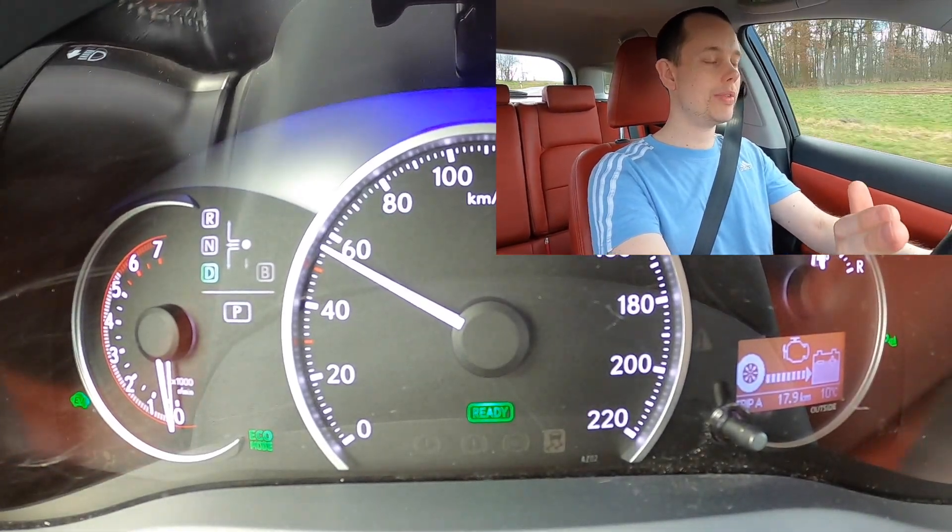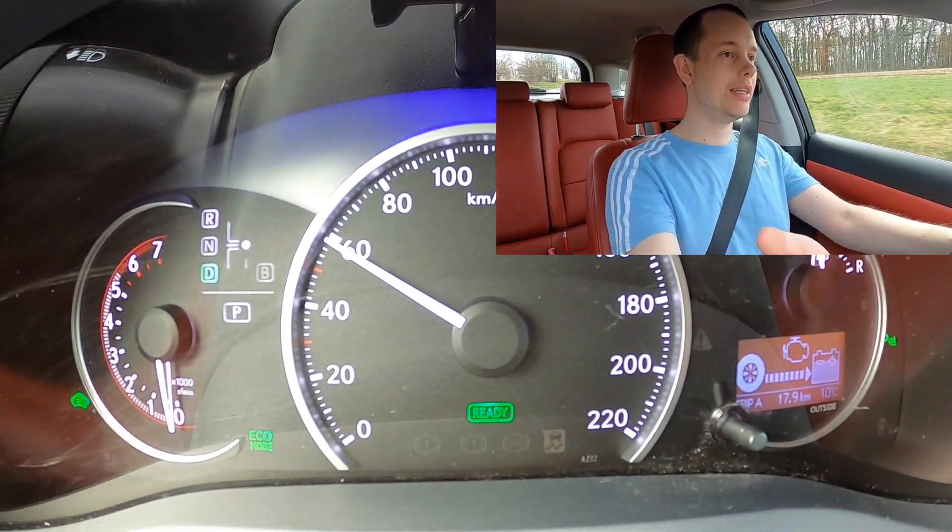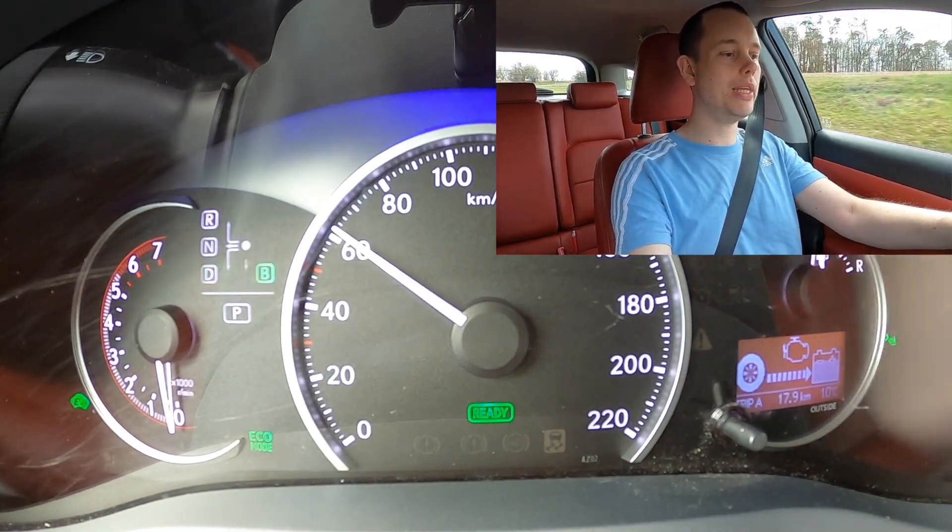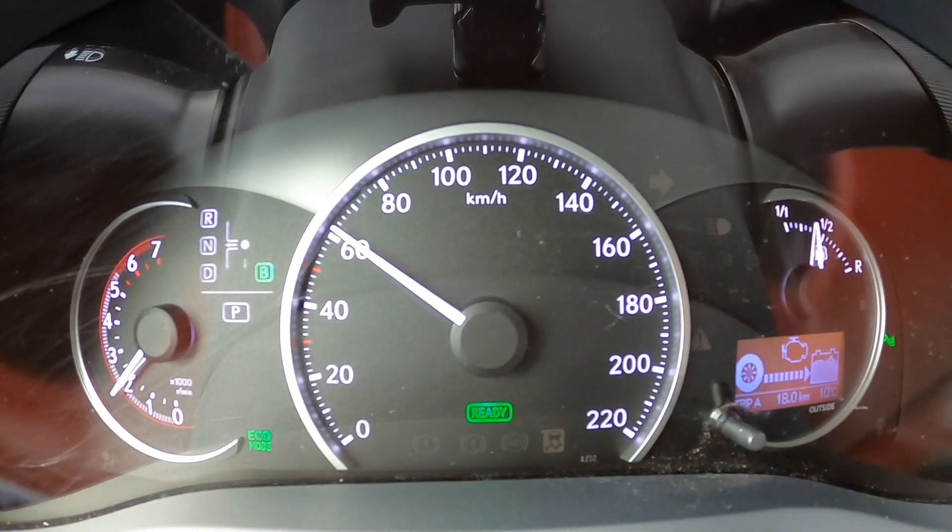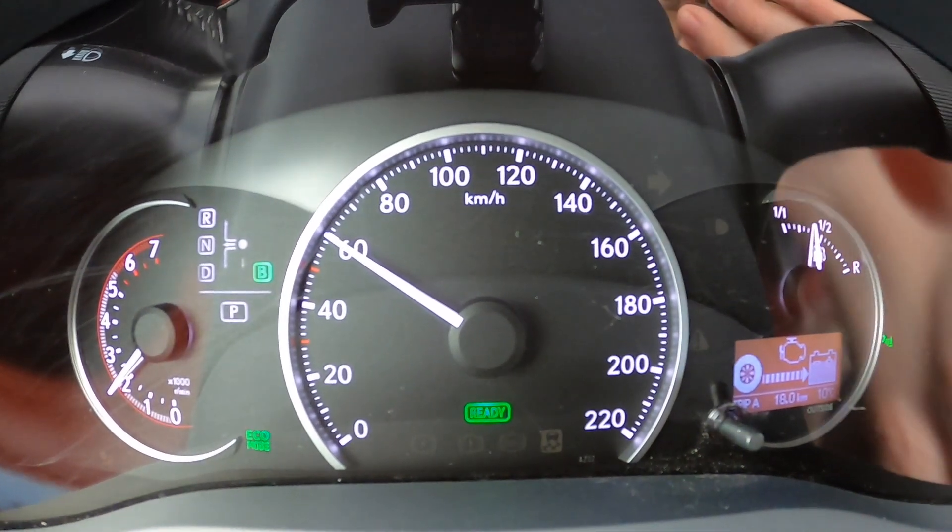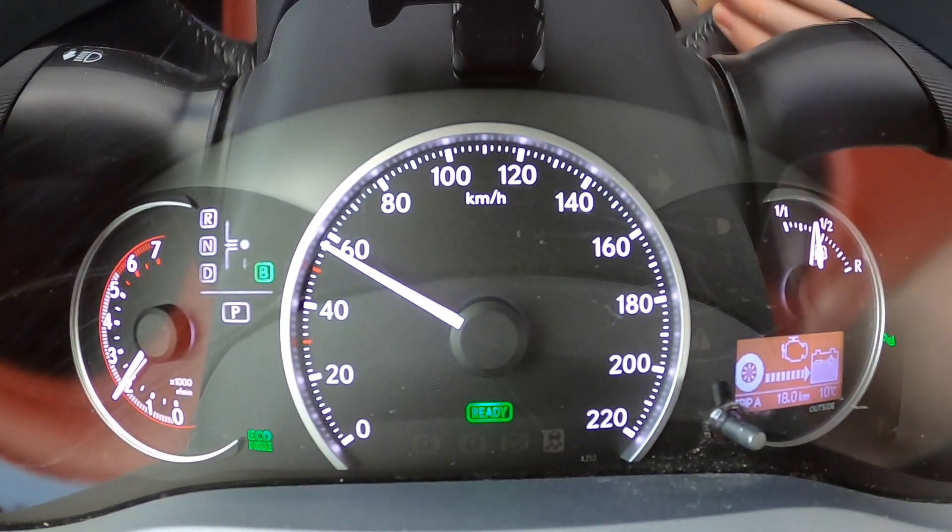Now, I am just coasting downhill in D and the engine is not running. I turn on B and you can see we get more brake force, but we do so by having engine braking going on.